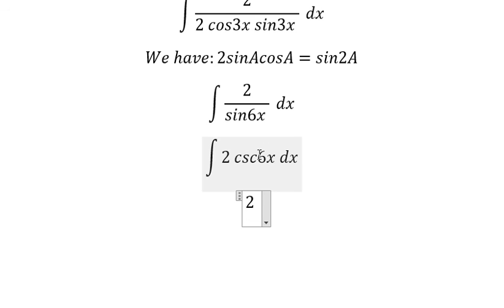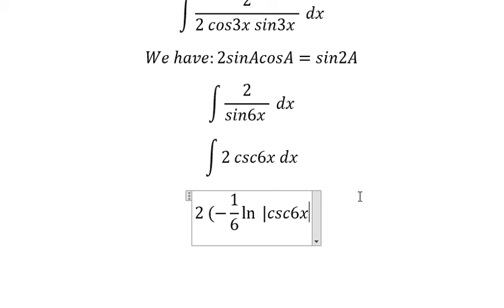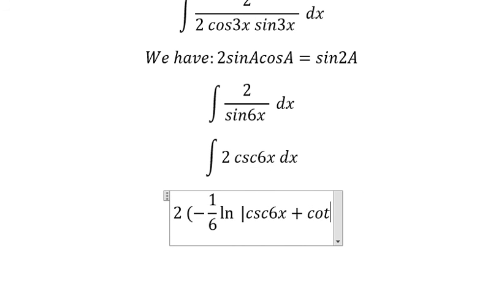And then we got the final answer. We put number 2 in here, the integral of cosecant of 6x. You got about negative 1 over 6 natural log of the absolute value of cosecant of 6x plus cotangent 6x.